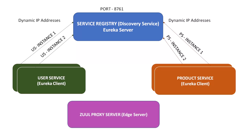Now this is the time for the entry of the Zuul proxy server — the edge server. The edge server will communicate with the service registry, i.e., the Netflix Eureka server. Whenever a request is coming from the client, it will come to the Zuul proxy server. The Zuul proxy server runs on a public IP address and port 443.